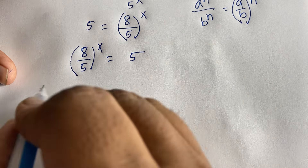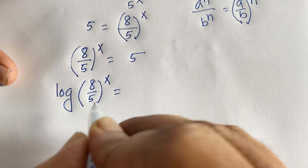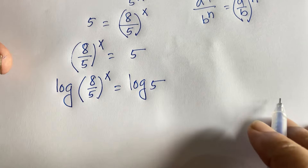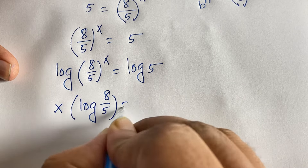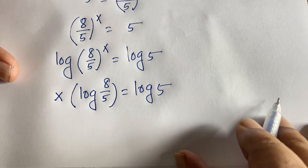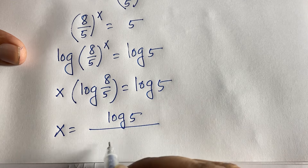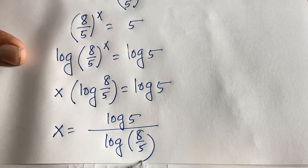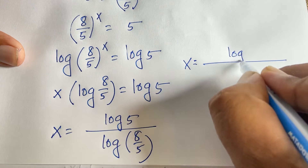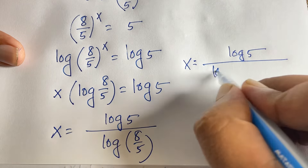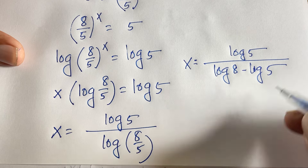If I apply log to both sides: log of (8/5) to the power x equals log 5. I bring the exponent in front: x times log(8/5) equals log 5. Dividing both sides by log(8/5), we get x equals log 5 over log(8/5), which equals log 5 over (log 8 minus log 5). This is our final answer.